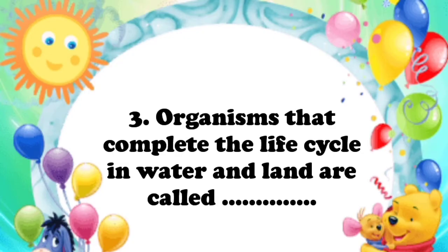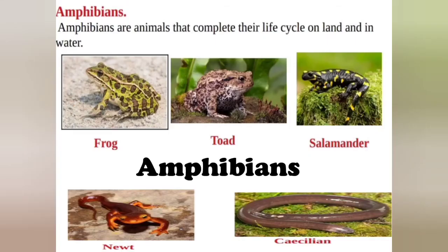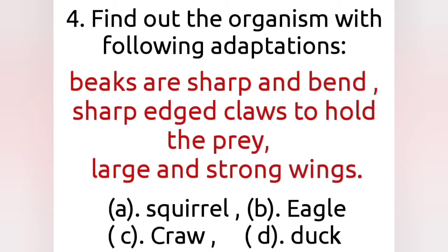Organisms that complete their life cycle in water and land are called — what? The answer is amphibians. Frog, toad, salamander, newt, and cecilian are all examples of amphibians. They complete their life cycle in water and land.